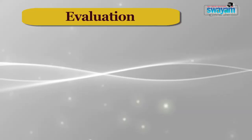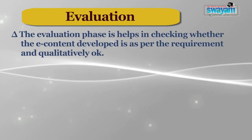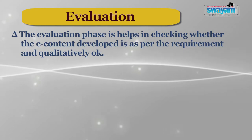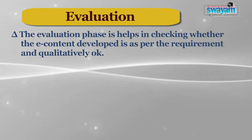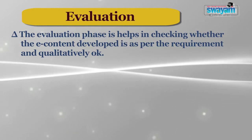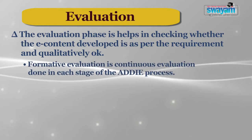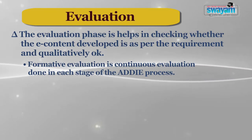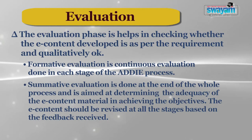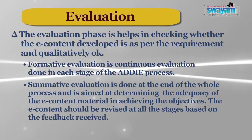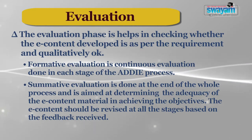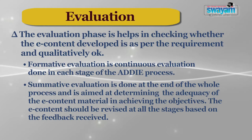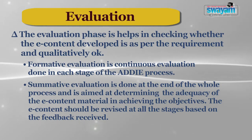The fifth phase is the Evaluation phase. It checks whether the e-content developed meets the requirement and is qualitatively sound. It is done in two parts: formative and summative evaluation. Formative evaluation is a continuous evaluation done at each stage of the ADDIE process. Summative evaluation is done at the end of the whole process and is aimed at determining the adequacy of the e-content material in achieving the objectives. The e-content should be revised at all stages based on feedback received.